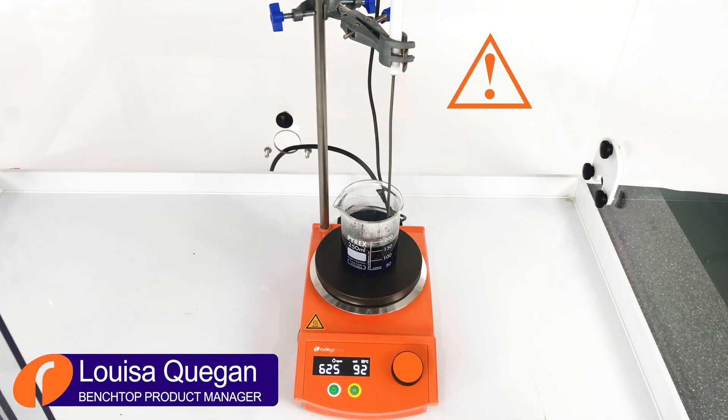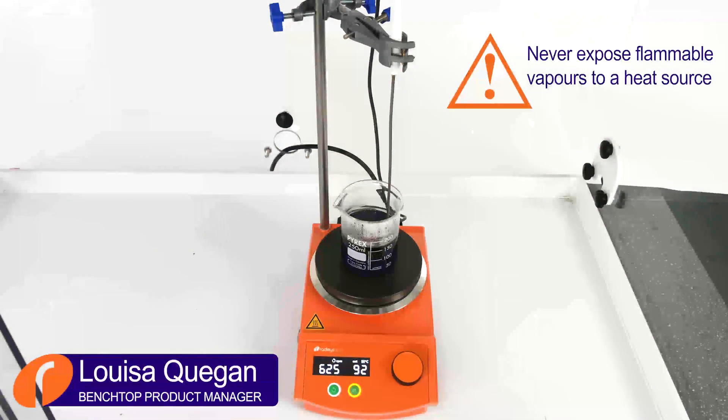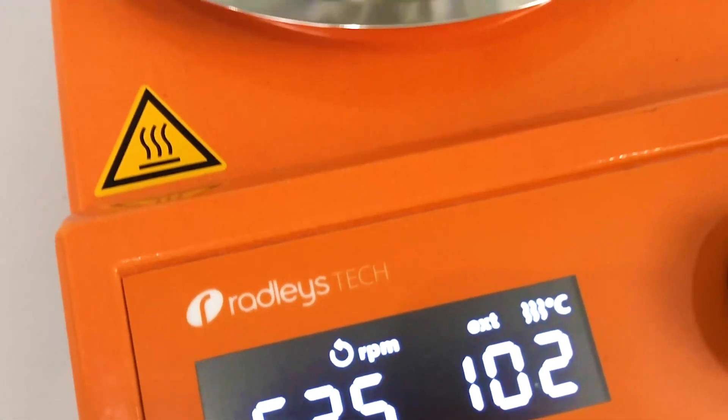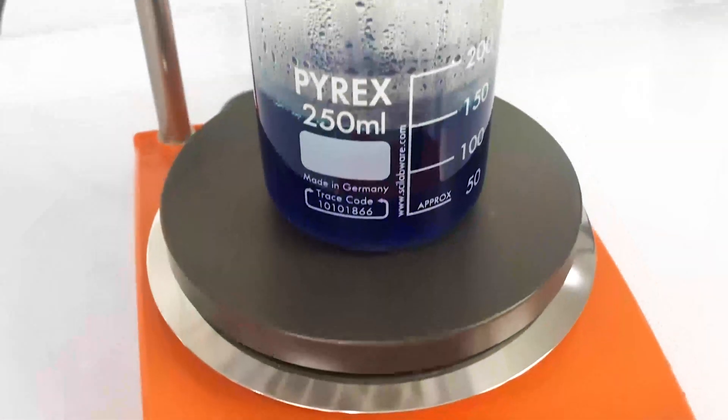Let's talk about how not to set up a reflux reaction and why. In this beaker, I've prepared approximately 150 ml of coloured water and started heating it by setting the hot plate to 15 degrees centigrade above the boiling point of water.